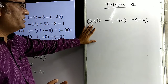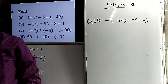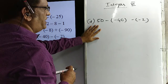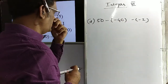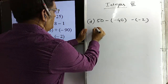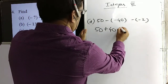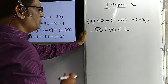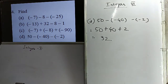Now let us do another problem: 50 minus of minus 40, minus of minus 2. If there is a plus sign outside the bracket, there is no change in the sign inside. But where minus sign is there, the signs of terms inside the bracket become plus. So all terms become positive: 50, plus 40, plus 2. These are all like-sign terms, so we add: 40 plus 50 equals 90, and 90 plus 2 equals 92. So 92 is the final answer.